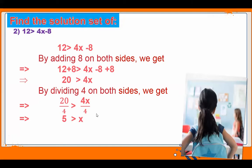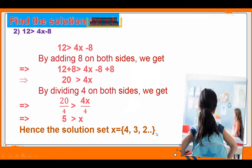When x values are less than 5, the solution set is 4, 3, 2, 1 and so on. Excellent! So the solution set x equals 4, 3, 2, 1 and so on. You can read the inequality from the right hand side as well — x is less than 5, so the solution set is 4, 3, 2, 1 and so on.